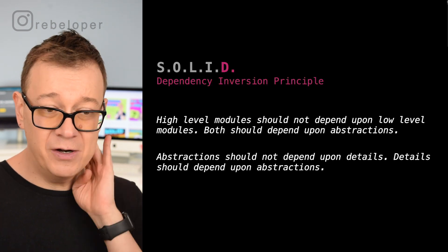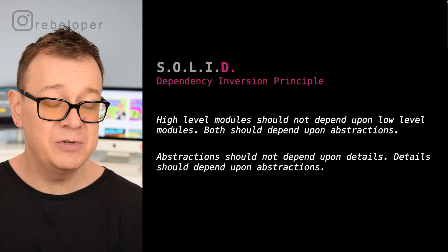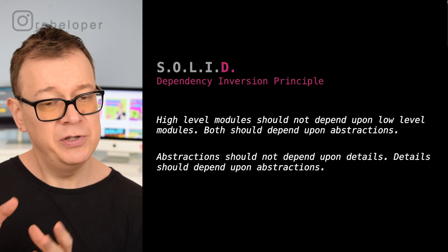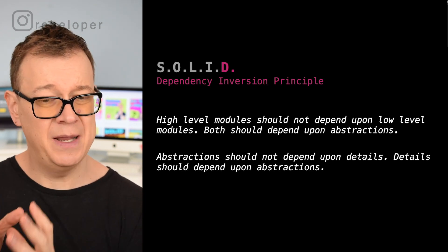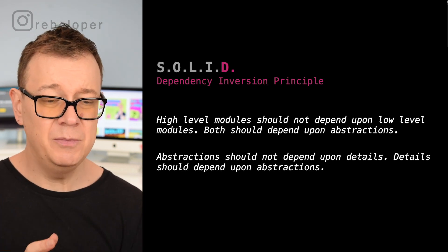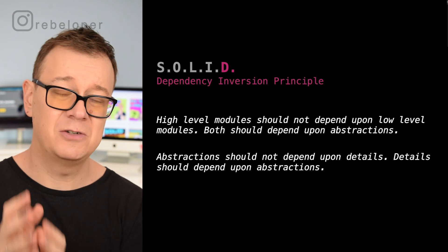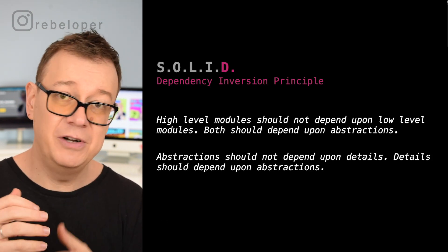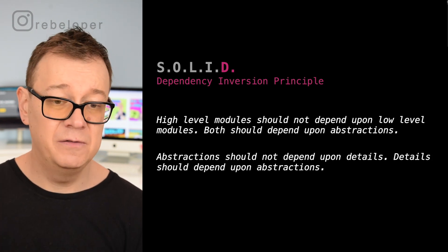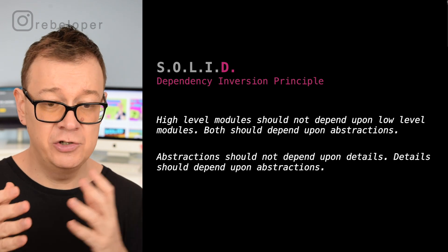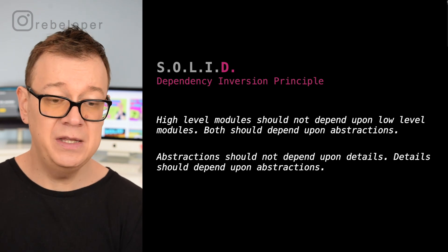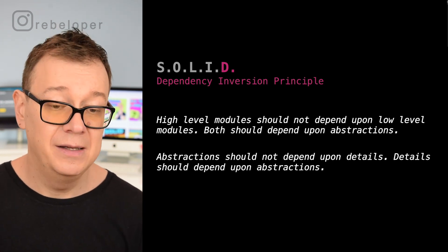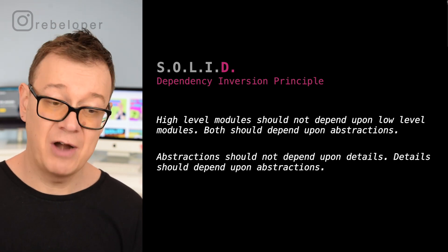Let's look at the Dependency Inversion Principle again: high-level modules should not depend upon low-level modules — both should depend on abstractions. To rephrase: abstractions should not depend upon details; details should depend upon abstractions.